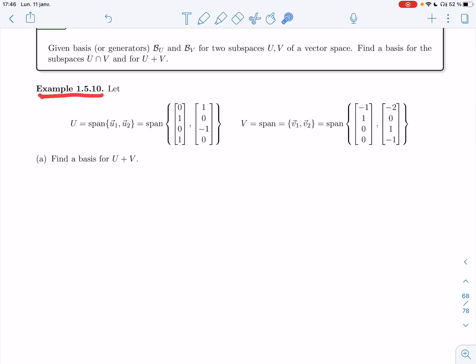Let's look at example 1.5.10. I'm going to take U to be the span of two vectors, U1 and U2, where U1 is this and U2 is this one. And I'm going to take V to be the span of two vectors, V1 and V2, where this is V1 and this is V2. So I want to find a basis for U plus V.